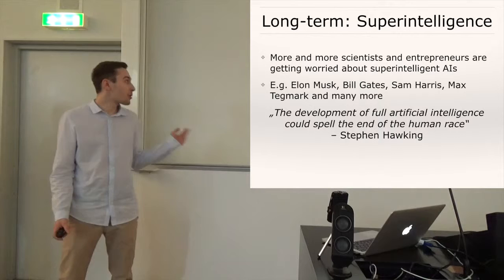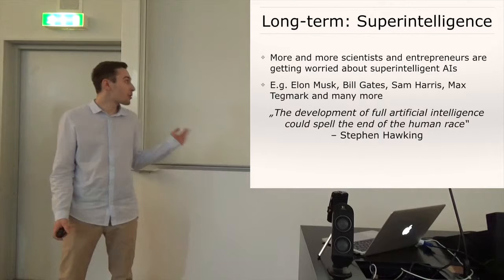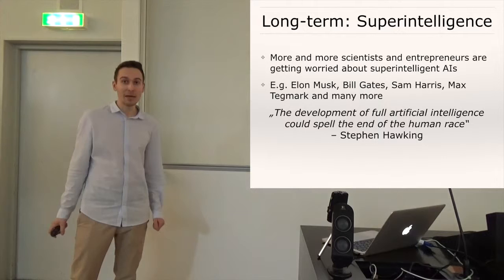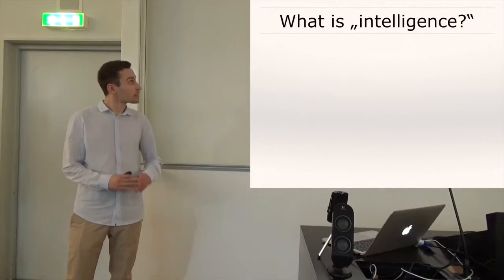And here's one quote by the famous physicist Stephen Hawking, the development of full artificial intelligence could spell the end of the human race. So at first this quote might seem like a technophobic fear-mongering, but maybe in the next 15 minutes we will see if it actually has substance.